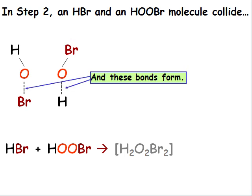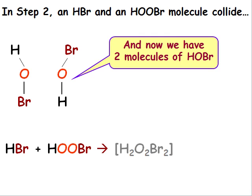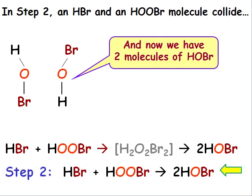These two bonds break and these two new bonds form. And now we have two molecules of HOBr. We summarize step 2 as HBr plus HOOBR gives 2 HOBr.